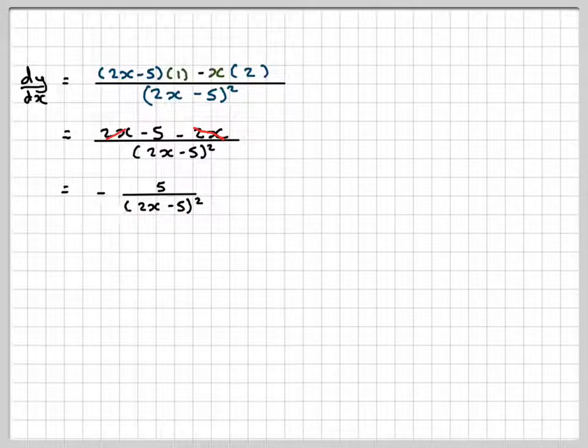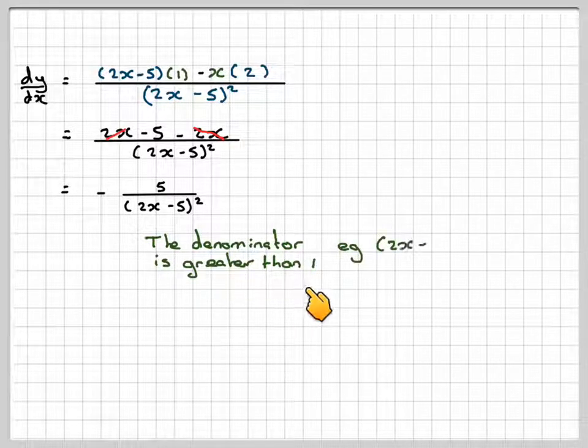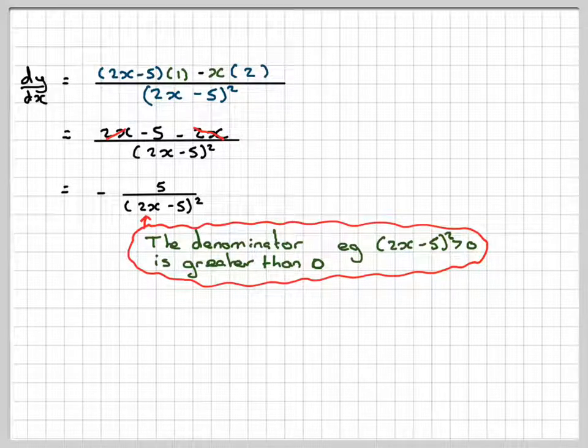So the denominator is greater than 0, i.e. 2x minus 5 all squared will be greater than 0 for any value of x, x not equal to 5 over 2.